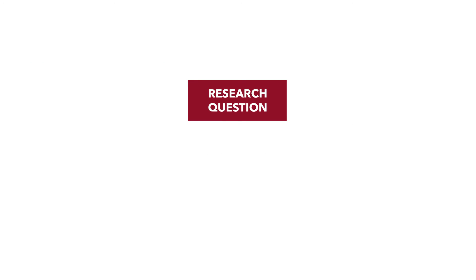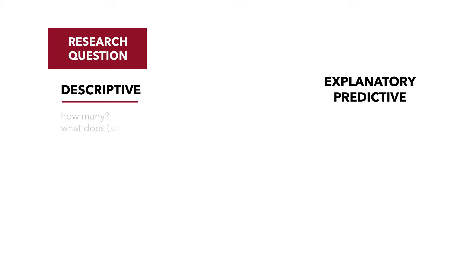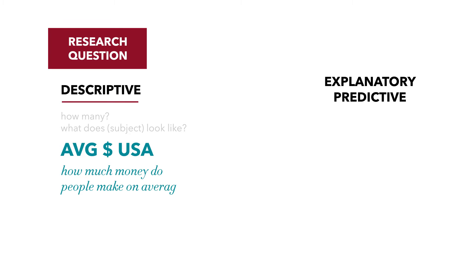The research questions we start with are generally one of two types: either descriptive in nature, or explanatory — sometimes called predictive. A descriptive question asks things like how many, or what does a group look like. For example, we might ask: what is the average income in the United States? That's a descriptive question — it simply asks how much money do people make annually on average.